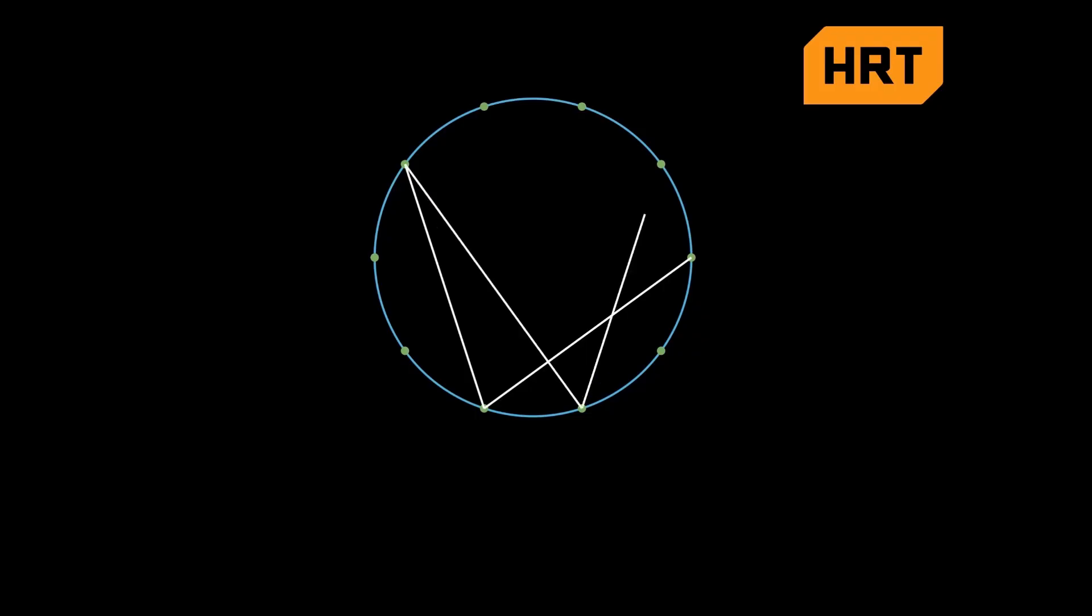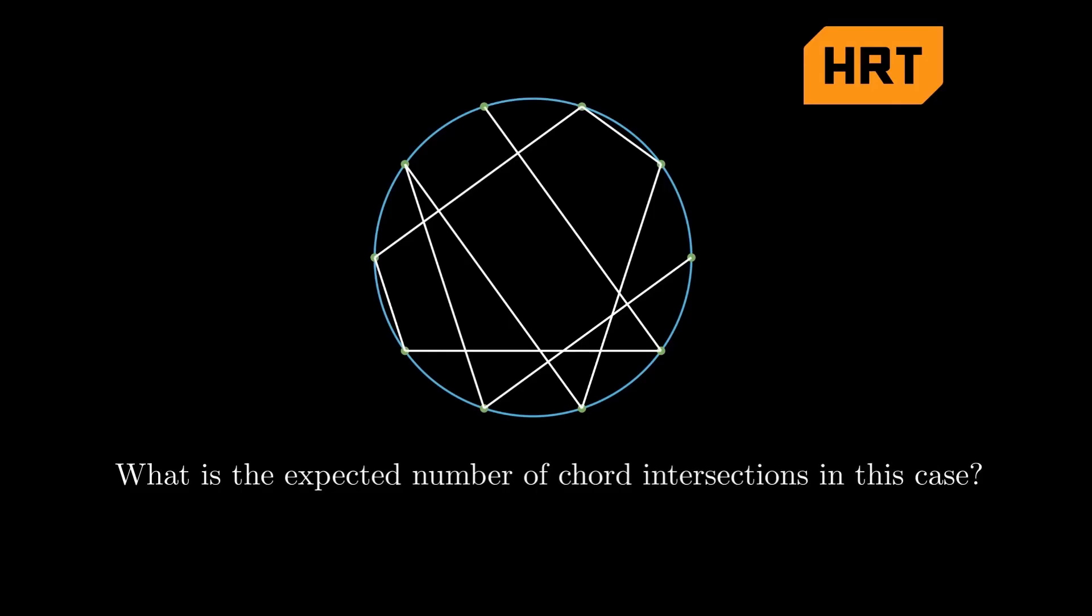Here's the follow-up problem. Suppose you have 10 random points on the circumference of a circle. You start with one point and connect it to one of the remaining 9 points randomly. Then you start with the second point and connect it to one of the remaining 8 points randomly. You continue this process till you reach the last point remaining. In this process, 9 chords will be formed. What is the expected number of chord intersections in this case? Try to solve this one on your own.